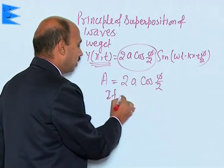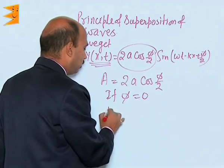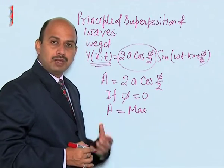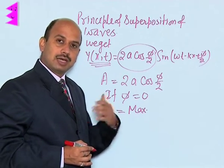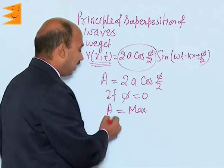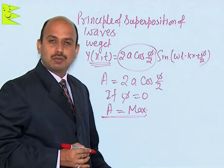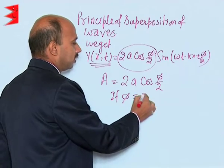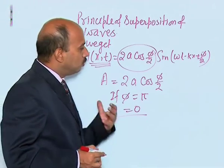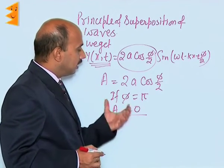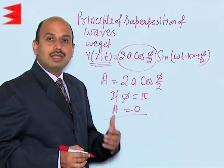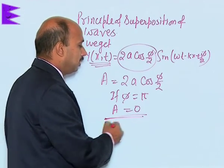If we take φ = 0, then A = 2a cos(0) = 2a, which is the maximum amplitude. This means when two waves traveling in the same direction superimpose such that the crest of one wave falls on the crest of another wave and the trough of one wave falls on the trough of another wave, the net displacement is maximum and the amplitude of the resultant wave is maximum. Now if we take φ = π, that is 180 degrees, the amplitude A = 2a cos(π/2) = 0. So if two waves traveling in the same direction with the same amplitude superimpose such that the crest of one wave falls on the trough of another wave, the net displacement is 0 and the net amplitude is 0.